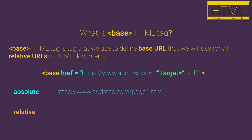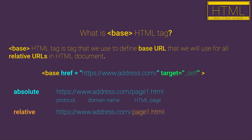An absolute URL is a complete address of your website or some page on your website. It contains a protocol name, the name of your website (also known as the domain name), and the name of the page you want to access. On the other hand, a relative URL represents just the name of the page you want to access, so for a relative URL you need to have some base URL address.